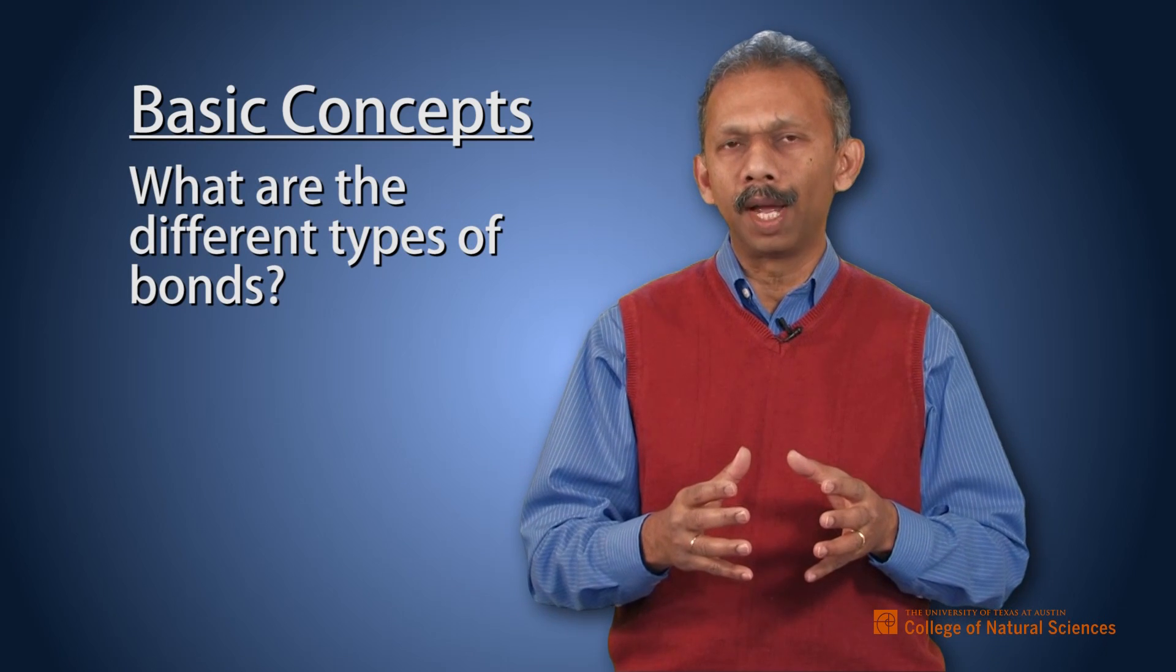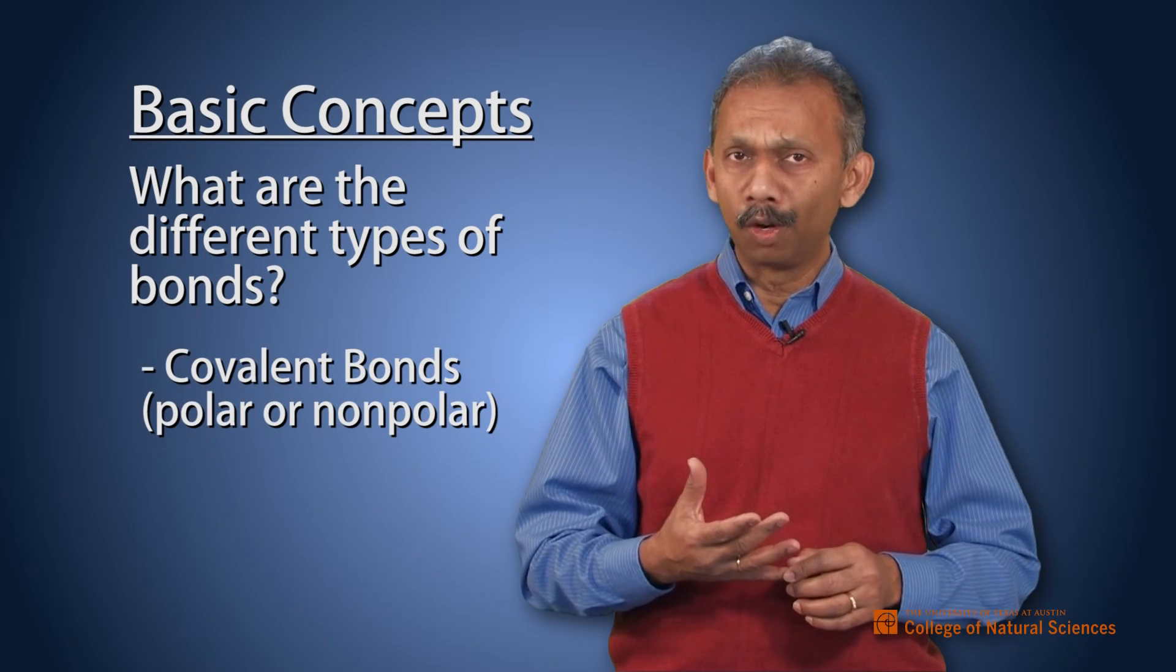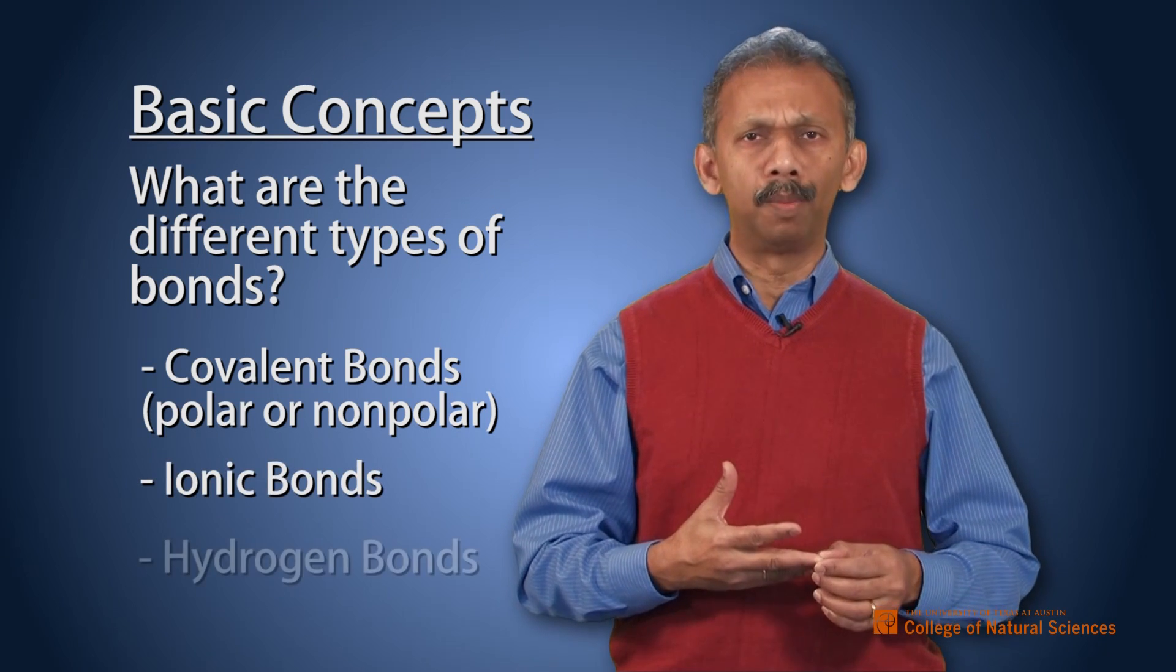So within that second part of this chapter, the types of bonds and interactions, you will see covalent bonds, a polar covalent or a non-polar covalent. And then you will see ionic bonds, and then you will see hydrogen bonds.